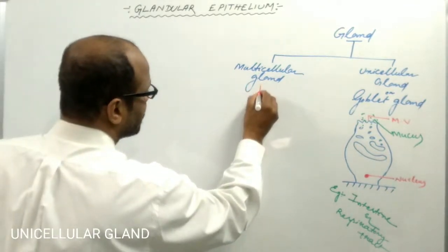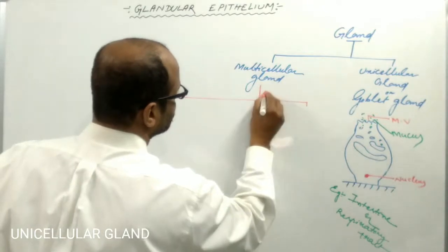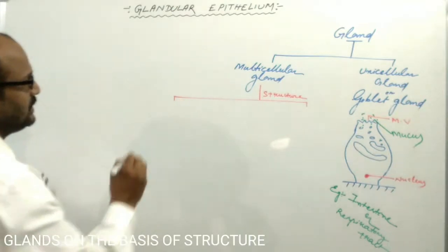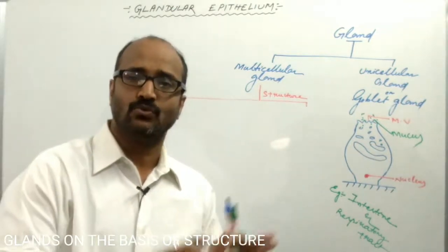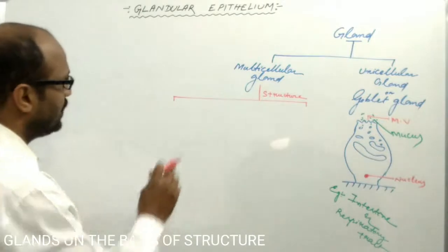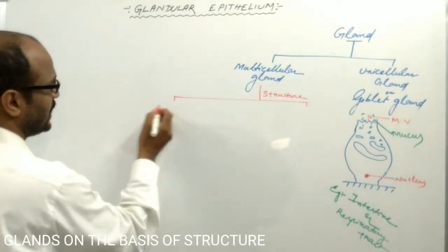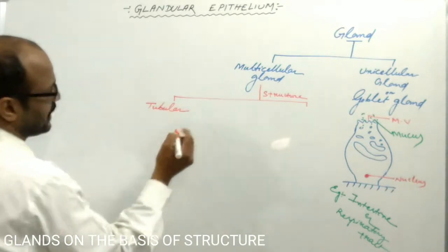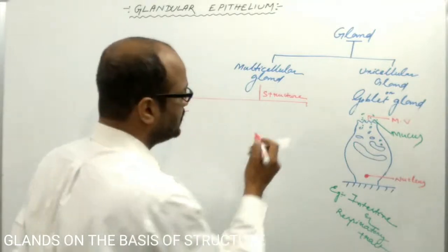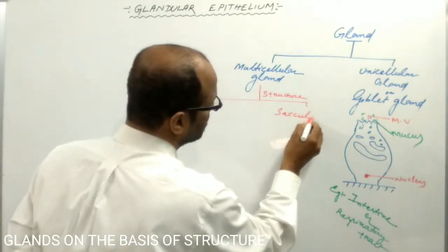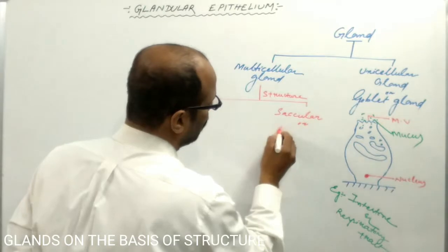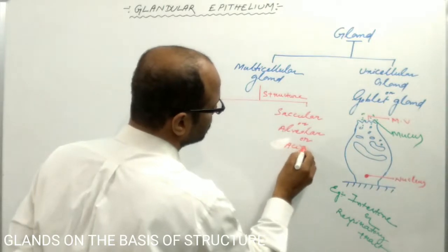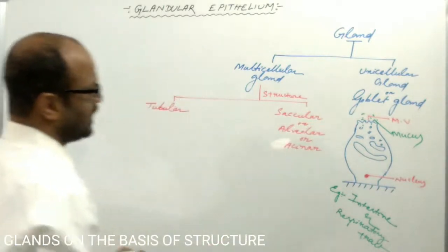On the basis of structure, multicellular glands are broadly classified into two types. If it is tubular in structure, it is known as the tubular gland. If it is sac-like in structure, it is known as the saccular gland, alveolar gland, or acinar gland.